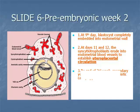Item 3: by the end of Week 2, the development of primary chorionic villi is observed. The primary yolk sac is replaced by the secondary yolk sac, and the amniotic cavity appears as a space between the cytotrophoblast and the inner cell mass.